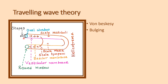So when the stapes is hit on the oval window, it hits the vestibular membrane and produces the bulging near the basilar membrane.